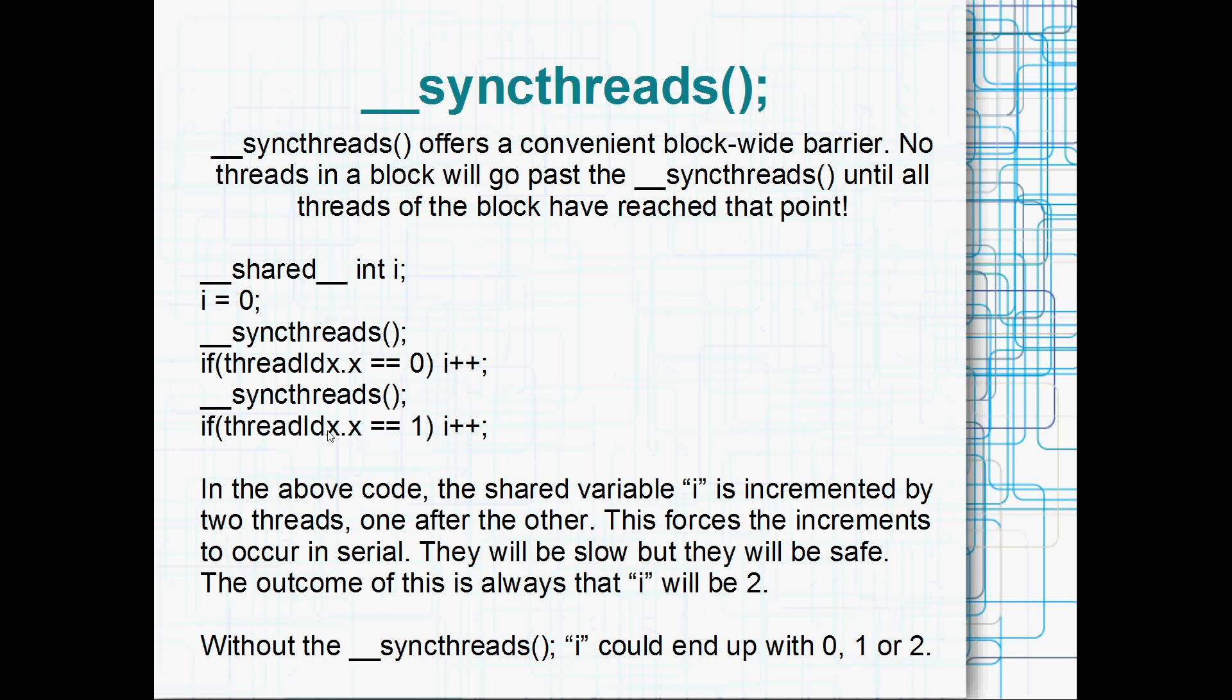Once again on the very next line we've got another condition, if the threadIdx double equals one, then increment i. And that's going to do basically exactly the same thing as this previous line, only it's going to be a different thread that increments i. But the important thing to know is that at the end of this sequence of __syncthreads() and incrementing i, we know, as programmers, we know the value of i. We've guaranteed that i is incremented twice. In serial too, which is also important, so it's going to be slow. But i will be two. We know that. We've guaranteed it because of these __syncthreads() here. And also the fact that only one thread is incrementing i at once. If we didn't have those __syncthreads() there, we could actually end up with i equal to 0, 1 or 2. It's completely out of our control. It would be up to the thread scheduler to decide what the value of i is.